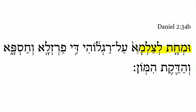Daniel 2:34b — umachat l'zama al-raglohi, di parzalah v'chaspah, v'chadeket himon. That brings us to saluk, sof pasuk, so we return to the beginning, noticing this conjunction, and the verbal root mem-chet-alef.